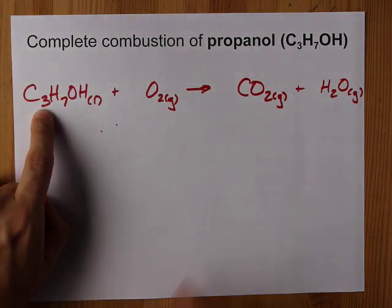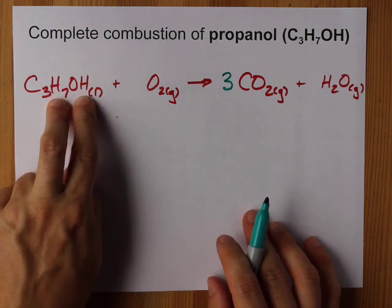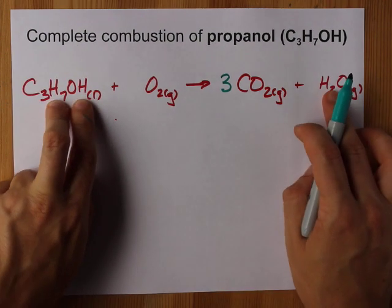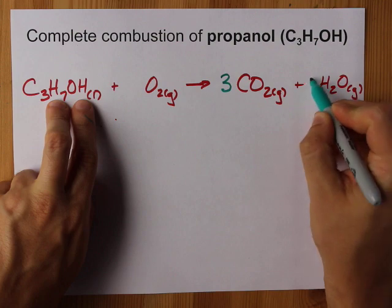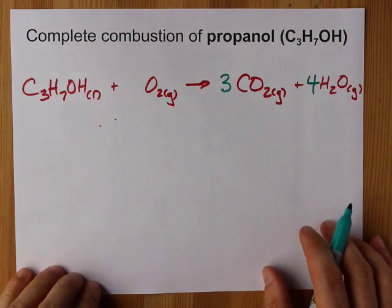Three carbons here. I need three carbons here. Eight hydrogens on the left. I need eight hydrogens here. That's four pairs because there's two hydrogens per one of those.